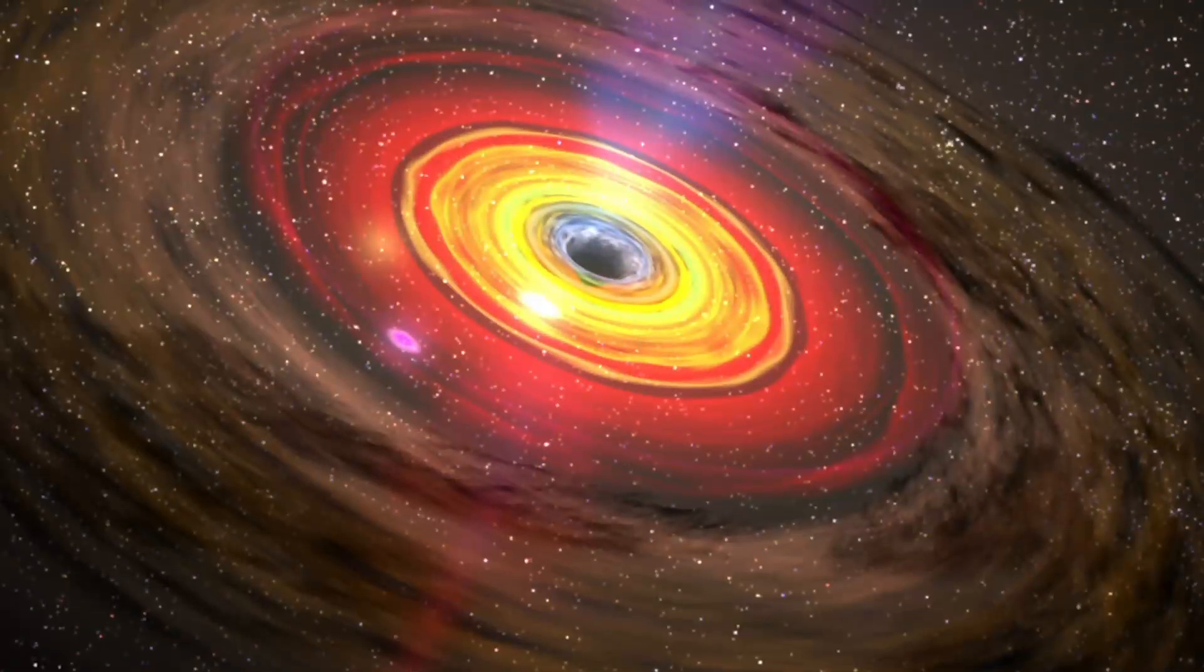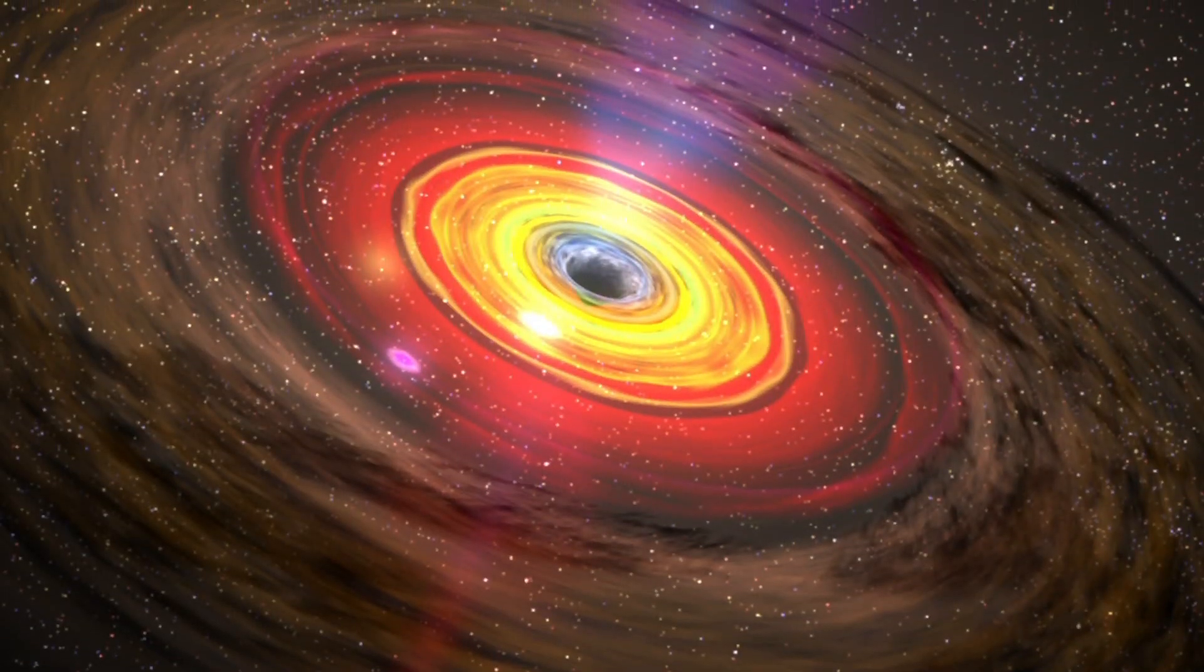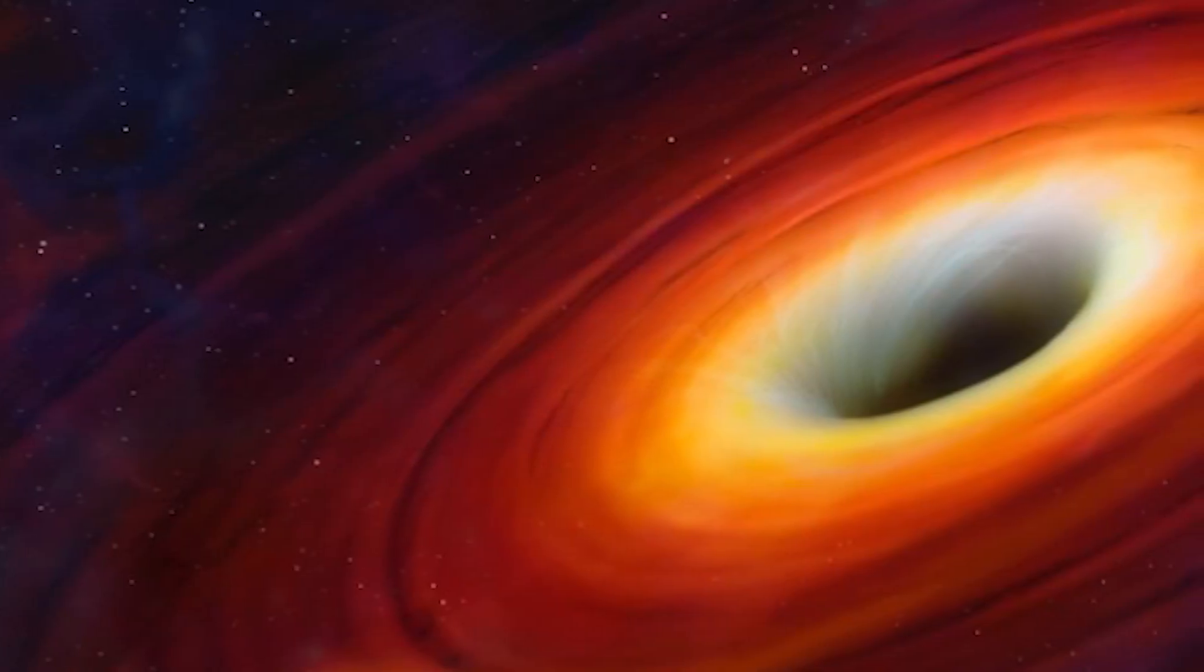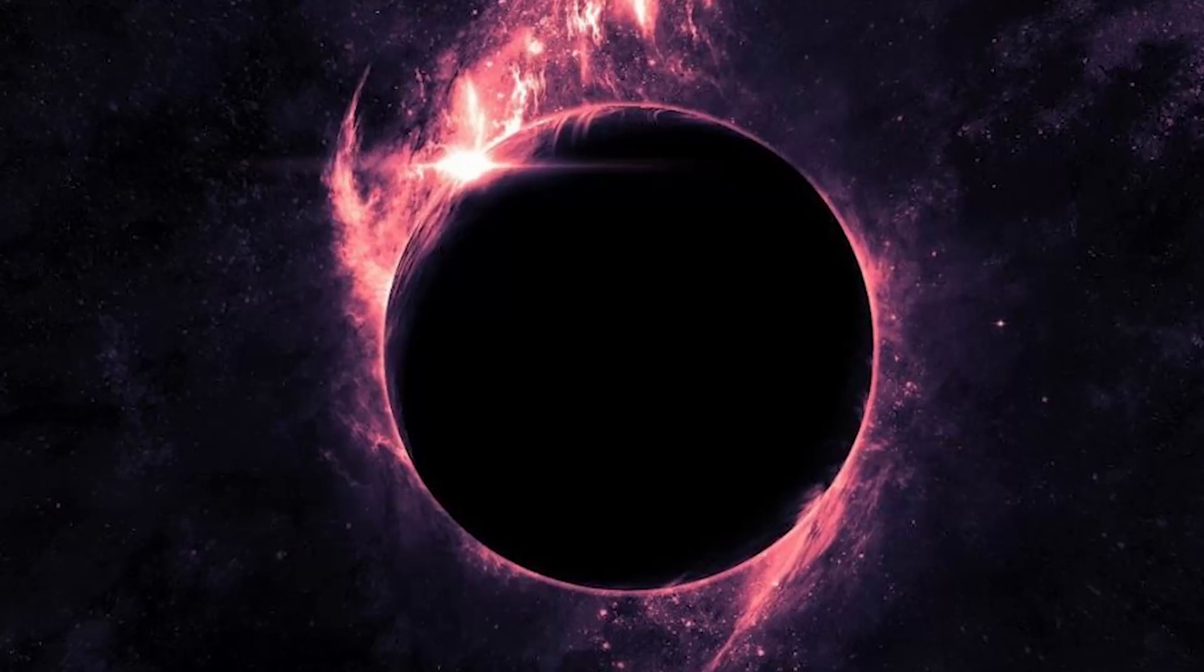Black holes come in four different varieties, and the nature and source of the black hole determine how they form. In essence, there are stellar black holes, supermassive black holes, miniature black holes, and intermediate black holes.